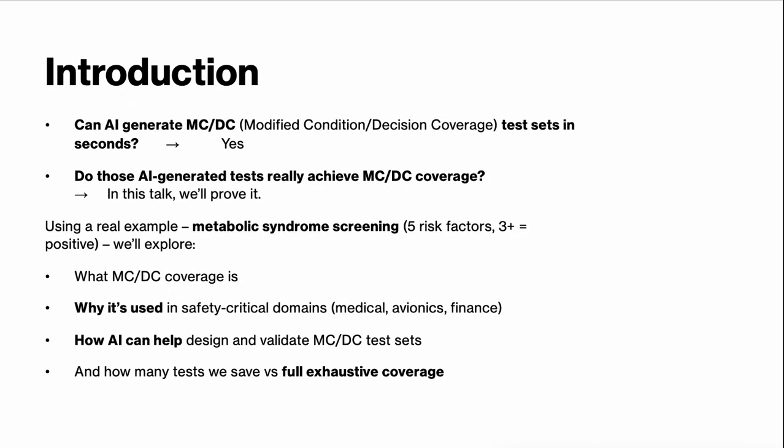First: can AI generate MCDC — modified condition decision coverage — test sets in seconds? Yes, it absolutely can. But the more important question is this: can we trust those tests to really give MCDC coverage? That's what I'm going to walk through today. I'll use a real medical example — metabolic syndrome screening — a condition where people often have things like a large waistline, high blood pressure, high blood sugar, high triglycerides, and low good cholesterol.